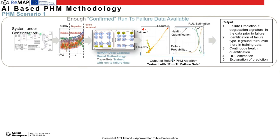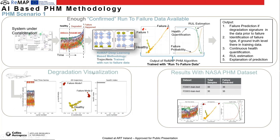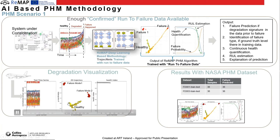If we deploy this framework in the field, data coming from the aircraft is a time series, and each time slice is embedded in a two-dimensional space constructed through the training process. You can see three clusters — a healthy region, failure mode 1, and failure mode 2. Each time slice is embedded as a yellow dot — at the beginning with no degradation, dots are near the healthy region, and as degradation evolves, the healthy dots start moving towards one of the failure mode regions. Similarly, the health index is flat at the beginning and goes down as degradation shows up. We validated this methodology with the NASA PHM dataset and got very decent results.